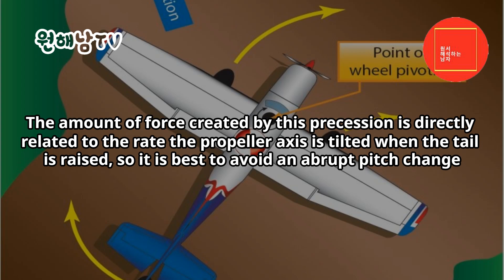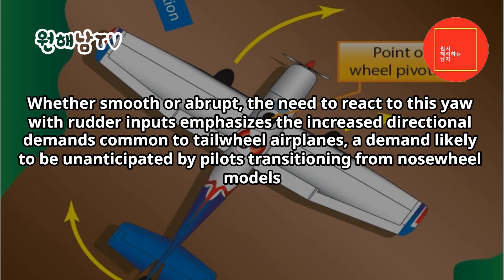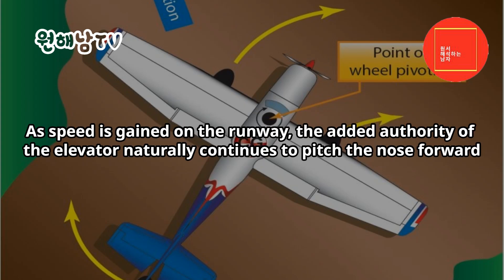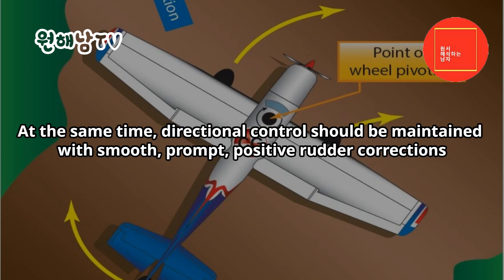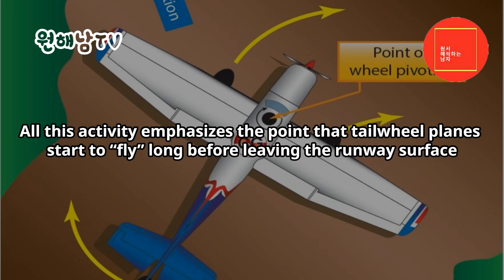It is important to note that nose-down pitch movement produces left yaw, the result of gyroscopic precession created by the propeller. The amount of force is directly related to the rate the propeller axis is tilted when the tail is raised, so it is best to avoid an abrupt pitch change. The need to react to this yaw with rudder inputs emphasizes the increased directional demands common to tailwheel airplanes — likely unanticipated by pilots from nosewheel models. As speed is gained, the added elevator authority continues to pitch the nose forward; the pilot should concentrate on maintaining a constant pitch attitude by gradually reducing elevator deflection while maintaining directional control with smooth, prompt, positive rudder corrections.